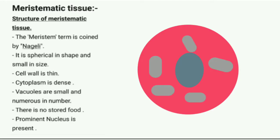Structure of Meristematic Tissue. The term 'meristem' was coined by Nageli. The meristematic cell is spherical in shape and small in size.